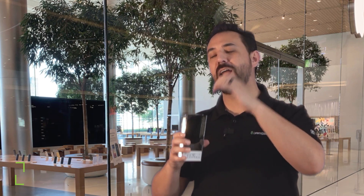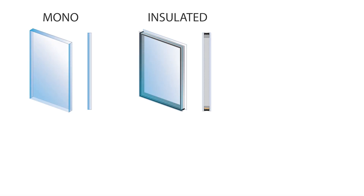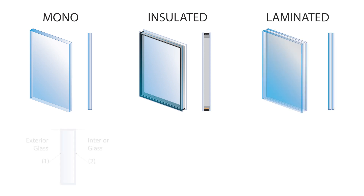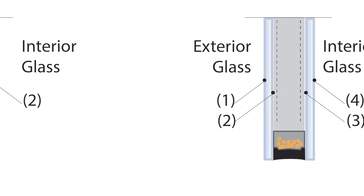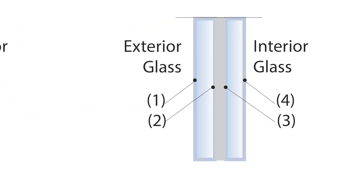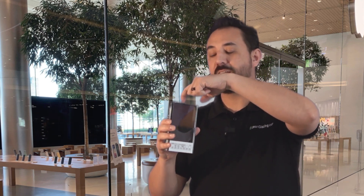Did you know that in the glass industry we use the term 'surface' to refer to each side of every piece of glass? It doesn't matter if it's a monolithic piece of glass, an insulated piece of glass, or even a laminated unit — we break each one of those units down by piece and, most importantly, by each side or surface of each piece. Those numbers always count from the outside. So if I were to say that this insulated unit had a low-E coating on surface number two, I would mean the second side of the first piece of glass.